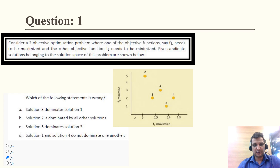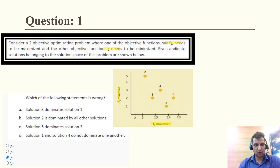Question 1: there are two objective functions, f1 and f2. f1 we have to maximize and f2 we have to minimize. There are a total of four statements and we have to identify which statement is wrong.